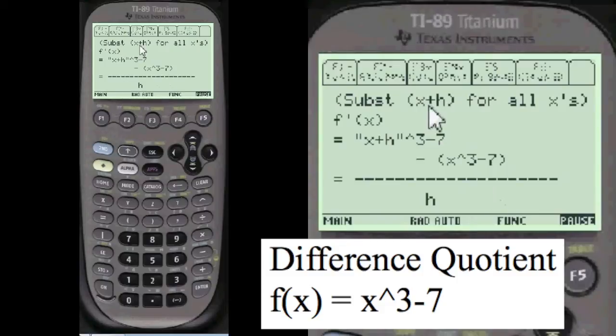And we're doing this. We put x plus h in for all the x's in the main function. So here it is in here, right? Now you're going to have to work it out as a cube.